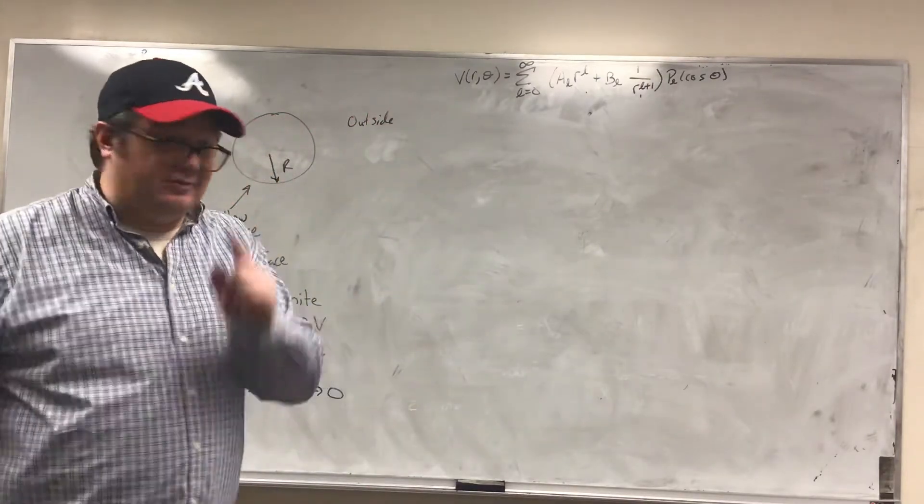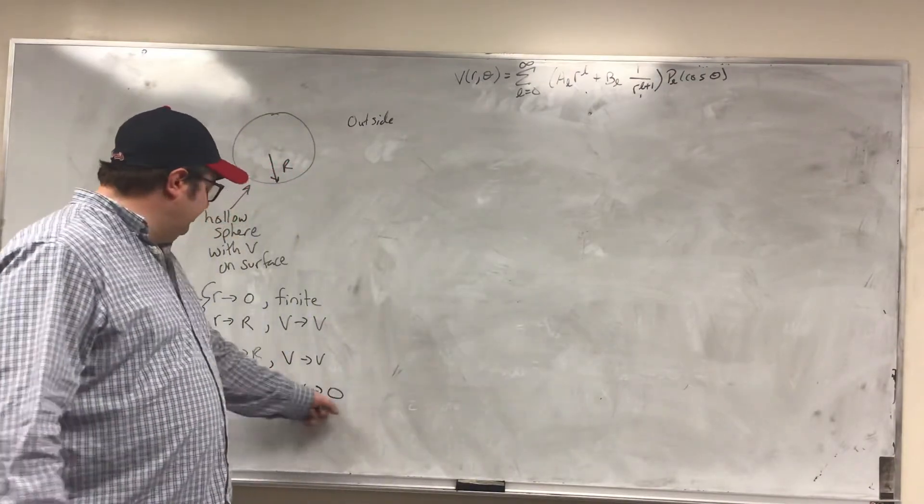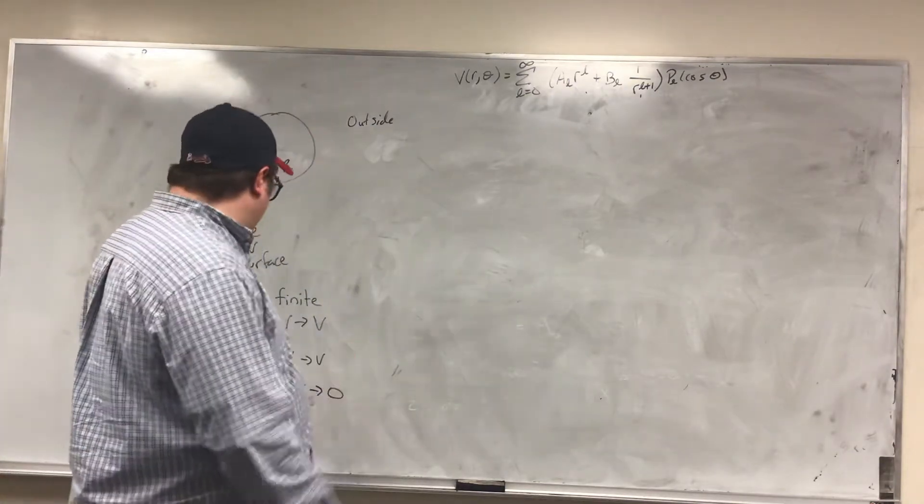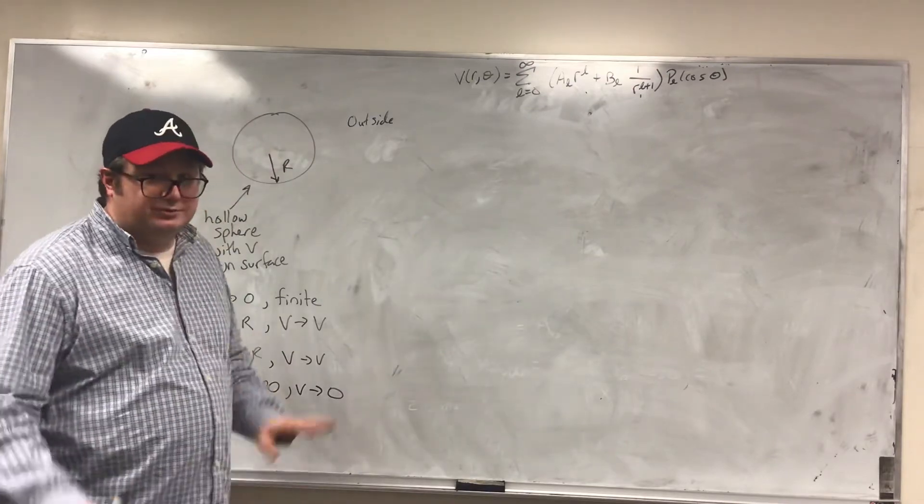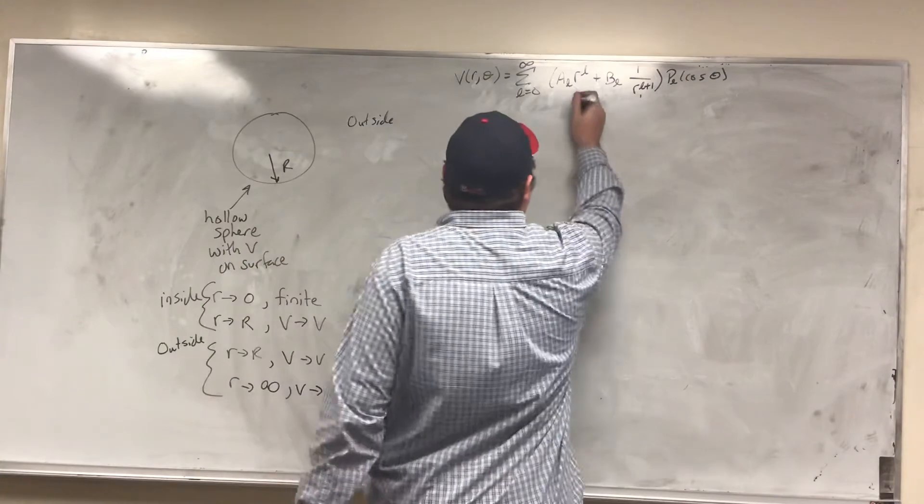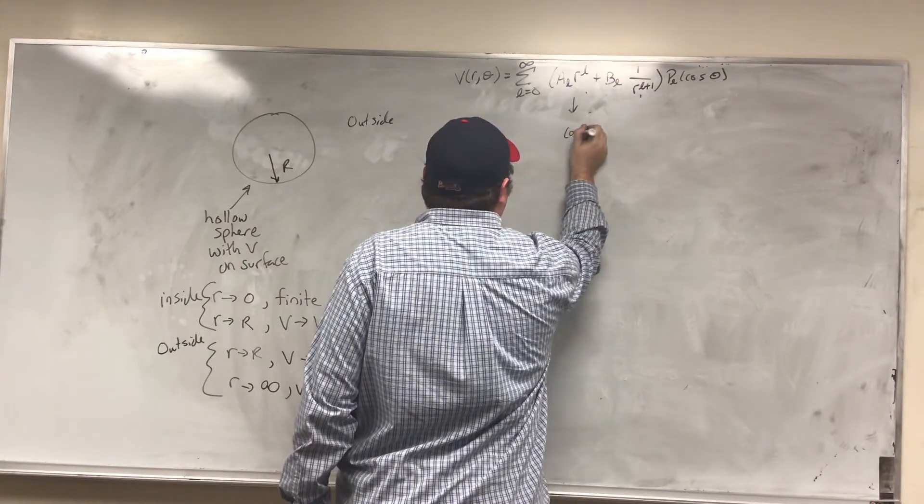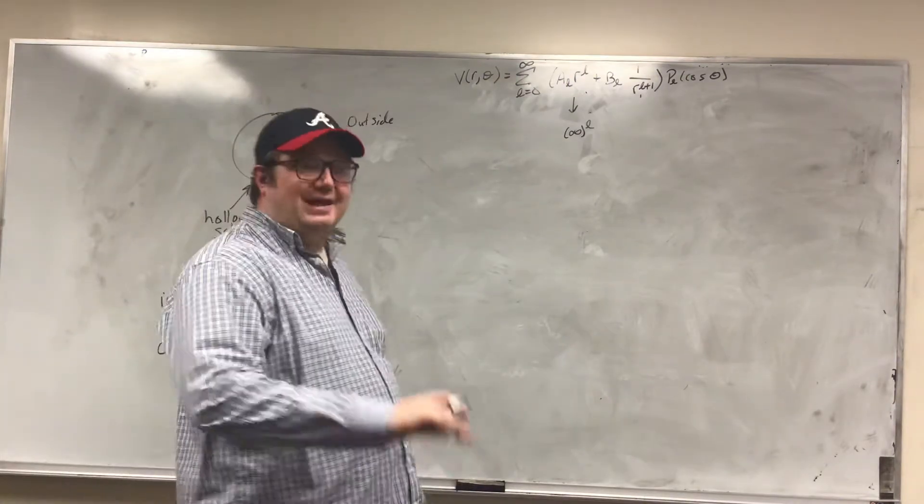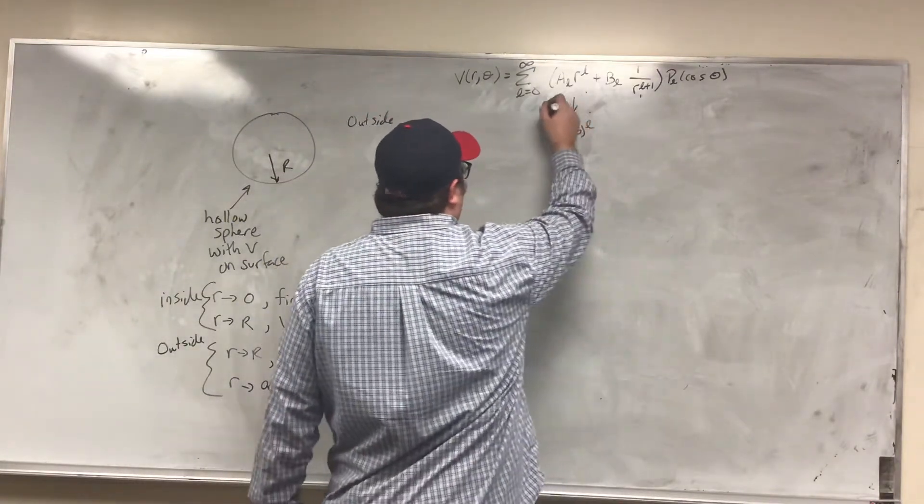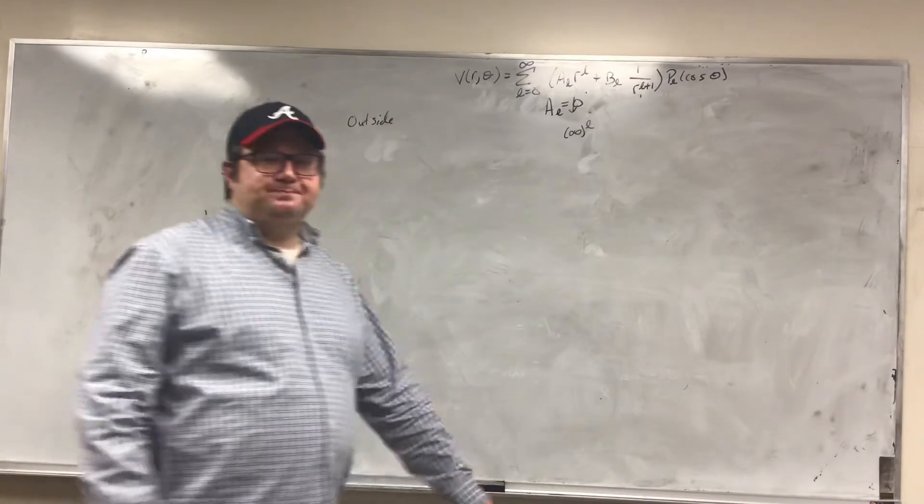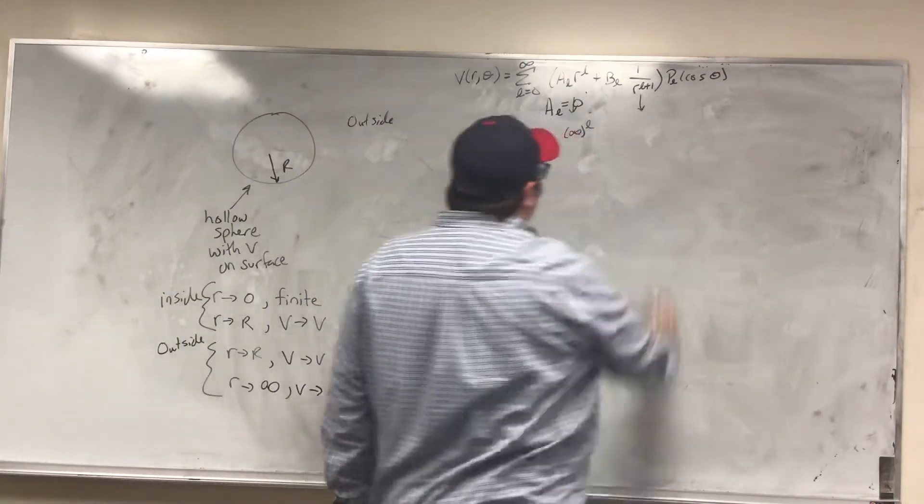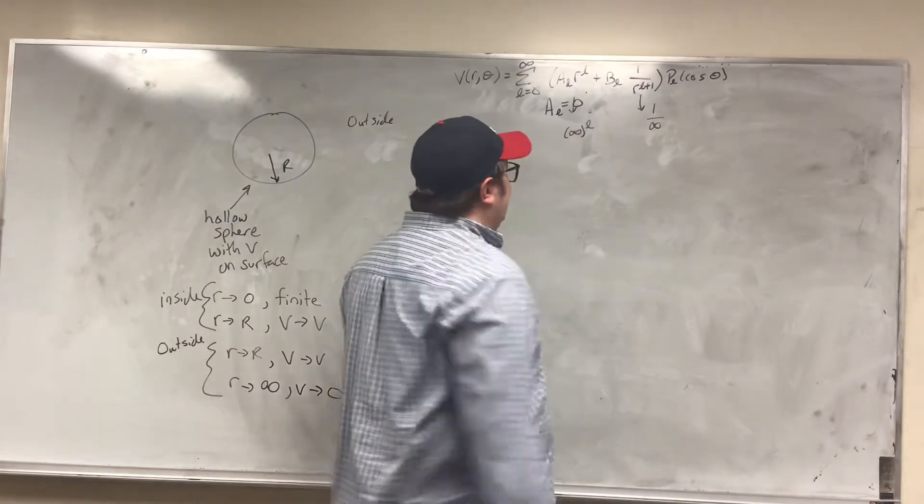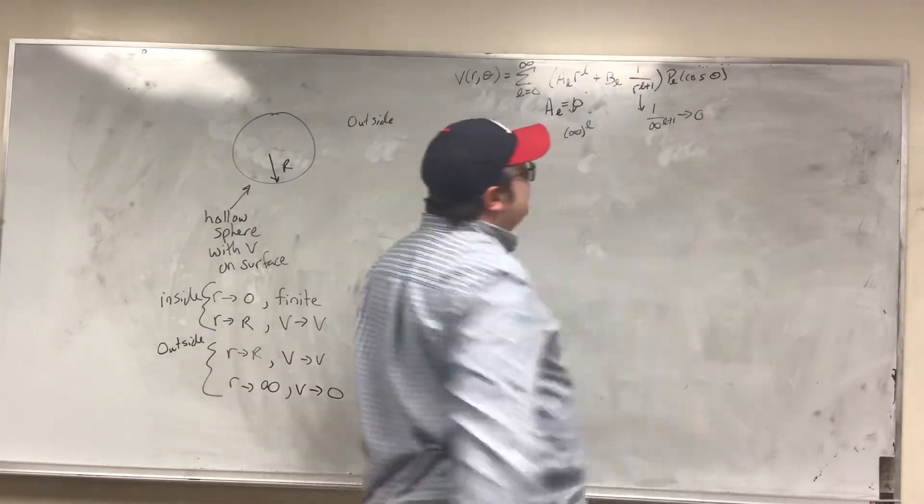Outside, we take our solution, and the first thing that we're going to do is we're going to look at the solution at R equal to infinity. What happens when I approach infinitely far away? Well, if I look at this one, infinity to the L, we've got a problem there. Our solution is not going to be finite, it's going to be infinite. That's not good. So the only way that this can be true is if A_L goes to 0. Now, if I look here, well, crap, now I might have an issue. Let's take a look. 1 over infinity to the L plus 1, well, that's going to go to 0. I'm in business.